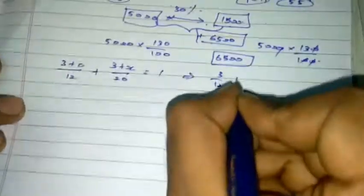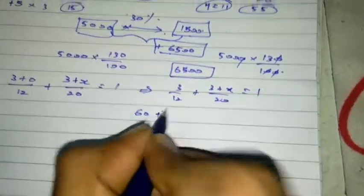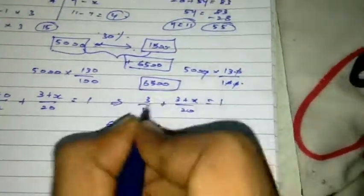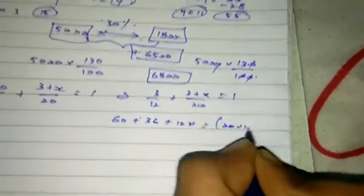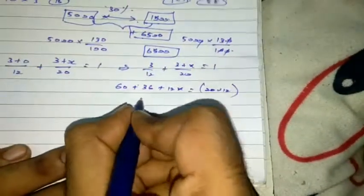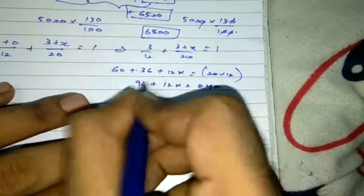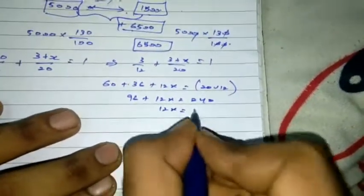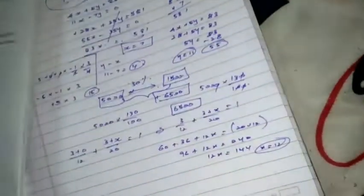3 by 12 plus 3 plus X by 20 equal to 1. So, 2 3 is 60 plus 2 3 is 36 plus 12X. There is one 20 ranges into 12. So, 96 plus 12X, equal to 240. So, 240 minus 96, 12X equal to 144. X is equal to 144, X is equal to 12. So, 12 is Option-C 12.